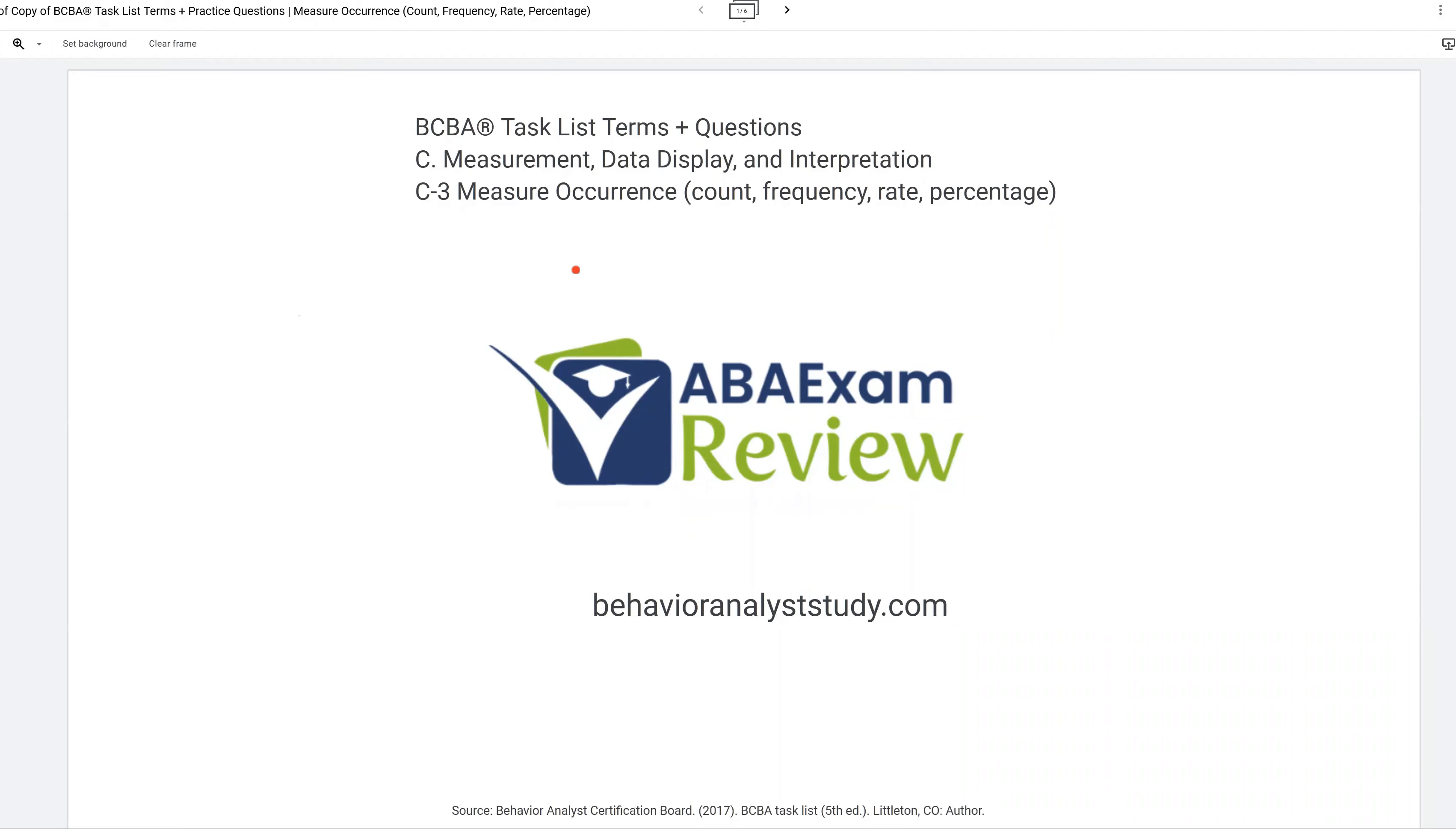Welcome back to ABA Exam Review and our continuation of the BCBA task list series with C3, Measure Occurrence. Occurrence includes count and frequency, rate and percentage. These are some of the easier continuous measurement types, but as always, we need to be completely fluent in the entire task list and all of our material. Don't neglect the foundational stuff. You'll regret it later. So let's focus on these foundational pieces first and then move on as we go through the task list.